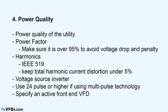Be careful with current source inverters — they can have terrible harmonics and need filters. We recommend a voltage source inverter and either a multi-pulse technology of 24 pulses or higher (18 pulses is marginal, under 18 pulses is not acceptable), or specify an active front end on your variable frequency drive.